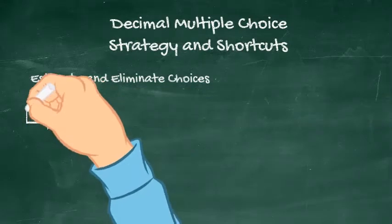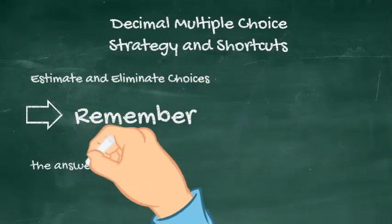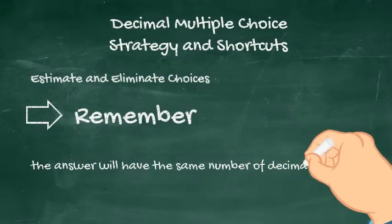Any time that you multiply decimals, it is going to give an answer with the same number of decimal places as the combined operands.